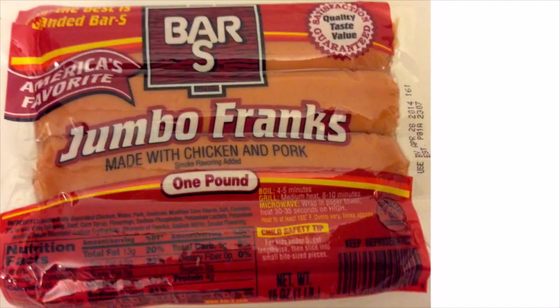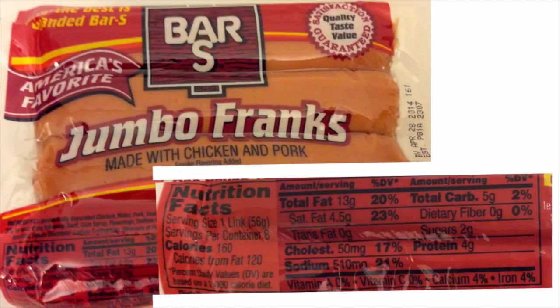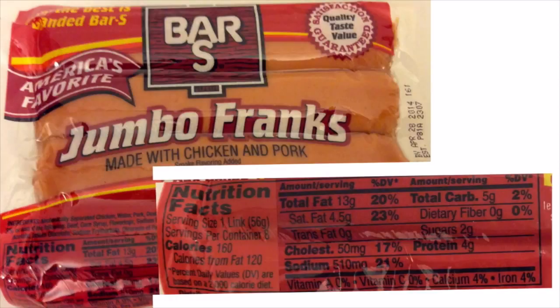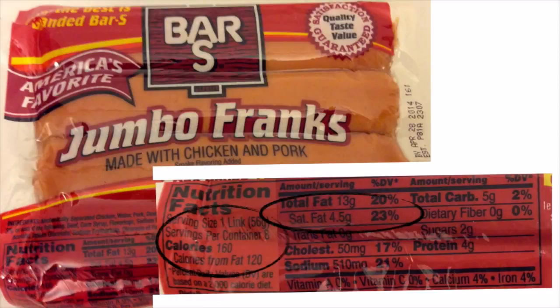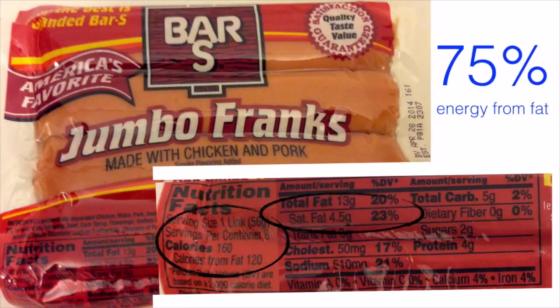For example, just one of these chicken and pork hot dogs, weighing 56 grams, has 13 grams of fat, which is 23%. These 13 grams of fat provide 120 calories out of the 160 total calories of the hot dog. That means 75% of the calories of this hot dog come from fat.